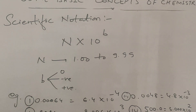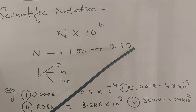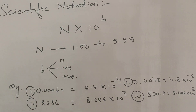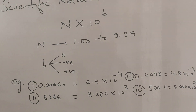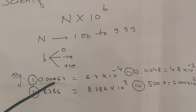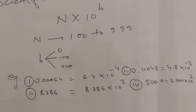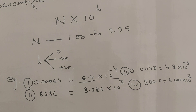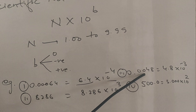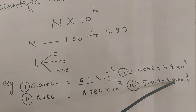In scientific notation, any number is written in the form N × 10^b, where N ranges from 1 to 9.99. The value b can be zero, negative, or positive. For example: 0.00064 = 6.4 × 10⁻⁴; 8286 = 8.286 × 10³; 0.048 = 4.8 × 10⁻²; and 500.0 = 5.000 × 10².